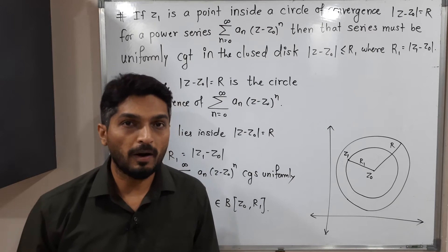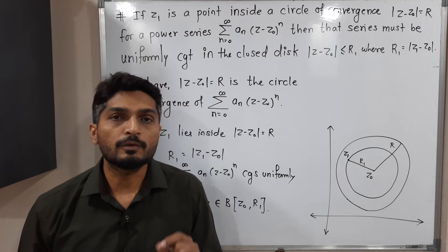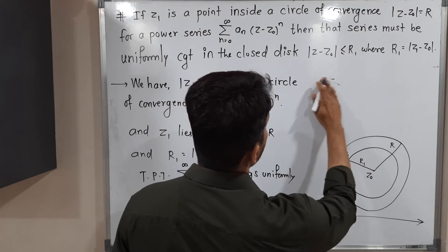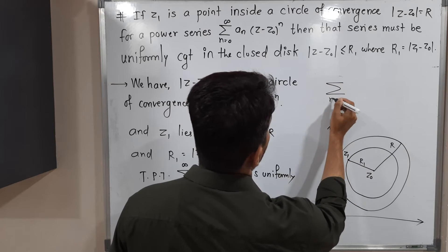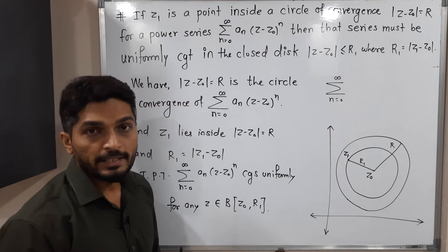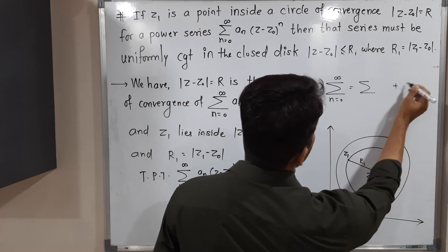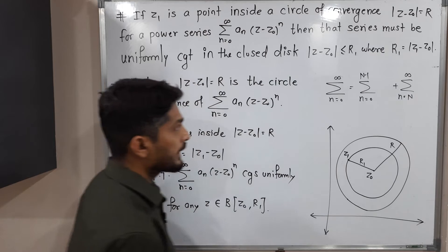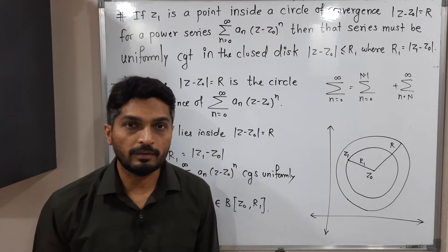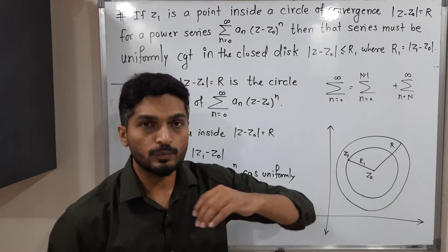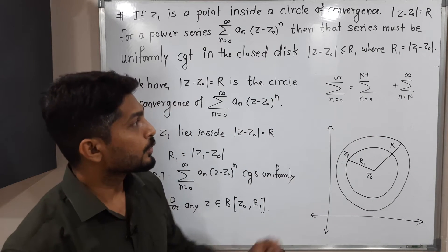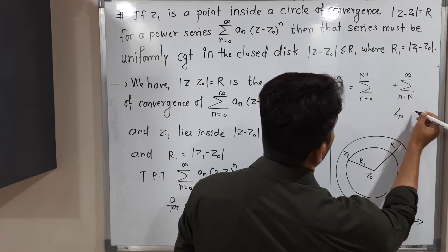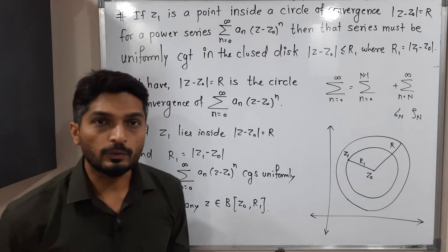In the convergence of power series, the remainder plays a very significant role. When you have a power series with infinitely many terms, the summation from n = 0 to infinity can be split into two parts: the first part where n varies from 0 to N−1, which has finitely many elements, and the second part where n varies from N to infinity, which has infinitely many elements. This second part is called the remainder, generally denoted σₙ or ρₙ.